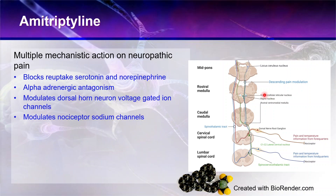It also affects adrenergic antagonism — another effect on the norepinephrine adrenergic systems. It also modulates dorsal horn neuron voltage-gated ion channels, having an effect at the level of the spinal cord, so these mechanisms can be synergistic together. It also modulates the nociceptors as a sodium channel blocker, which makes it quite useful in human medicine where amitriptyline can be applied as a topical cream directly to the painful area.